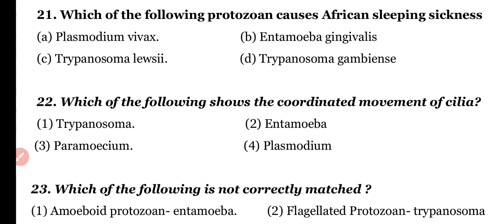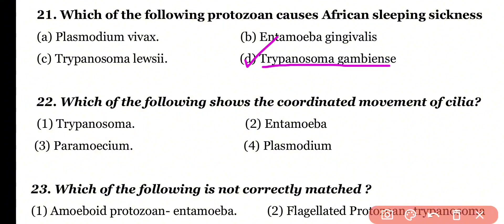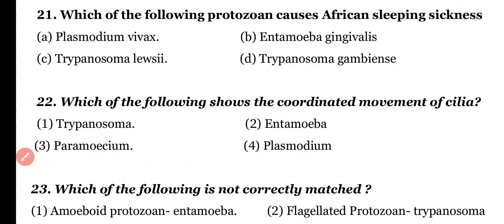Question number 21: Which of the following protozoans causes African sleeping sickness? Plasmodium vivax, Entamoeba gingivalis, Trypanosoma lewisi, or Trypanosoma gambiense? Correct answer is option D. Trypanosoma gambiense causes African sleeping sickness.